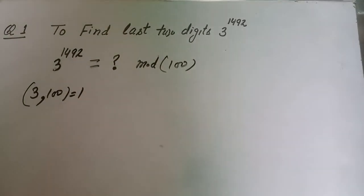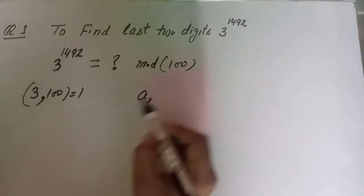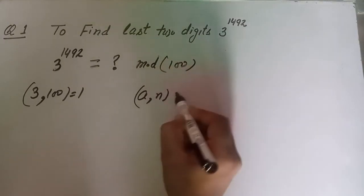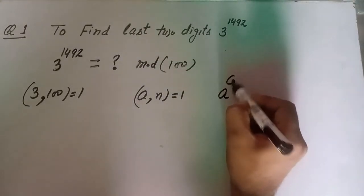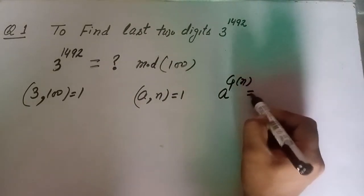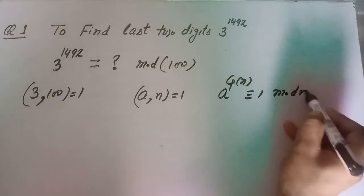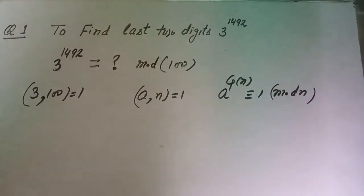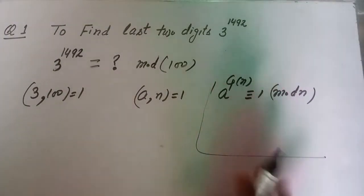Since 3 and 100 are co-prime, we can apply Euler's theorem, which states: if a and n are co-prime, then a raised to power φ(n) is congruent to 1 mod n. This is Euler's generalization of Fermat's theorem.